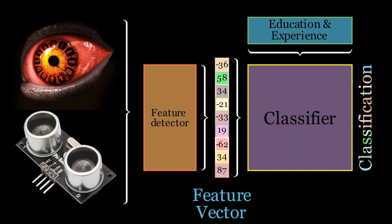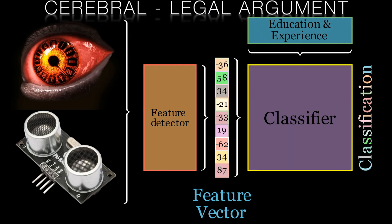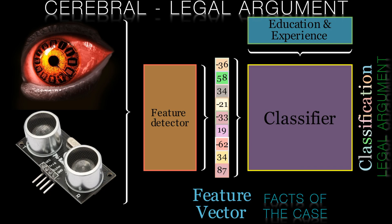But as this is a general formulation, it needn't be reflexive. It could be more cerebral, such as mounting a legal challenge. The feature vector here contains the facts of the case. The classification is our legal argument. This is based on our experiences and the legal precedence facts that we've learned.